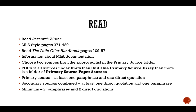The next thing you want to do is choose two of the sources from the approved list in the primary source folder. I understand the links do not work, so I have created PDFs of all of these sources. You may find them under the units tab, then go to unit one primary source essay, and there you will find a folder called primary source paper sources. Every one of your primary and secondary sources has been converted to a PDF there for you.